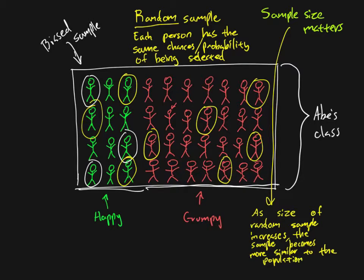Now, because this is random, this is a general trend. It is still possible to take a large sample and have it be biased. I could pick 10 people out of this class and just by chance still get mostly the smaller subgroup — the happy people. Random selection doesn't guarantee absolutely for certain that the sample will have the same characteristics as the population. But as the sample size gets larger, it is more and more likely that the characteristics of the sample will closely match those of the population.